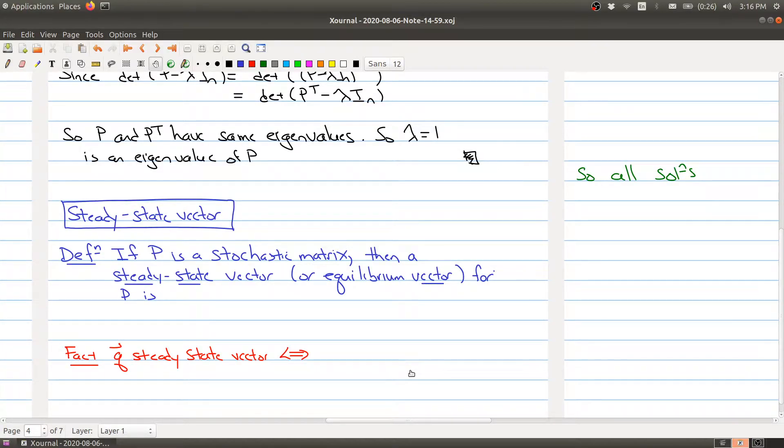So welcome back. What we just saw in part three is that when we have a stochastic matrix, we always know that lambda equals one is an eigenvalue. We're going to take advantage of that fact in a minute.